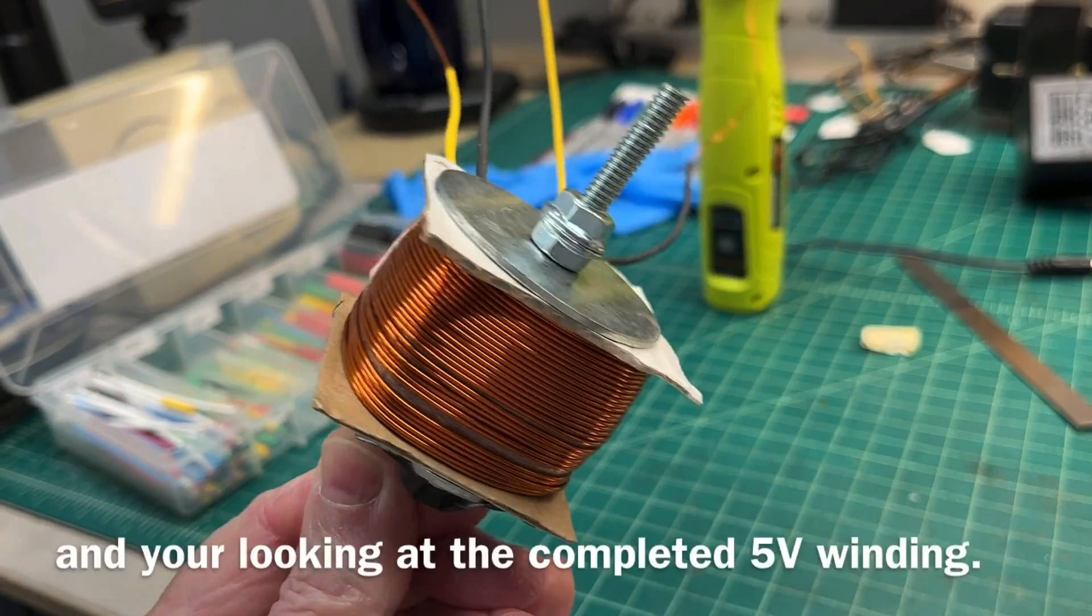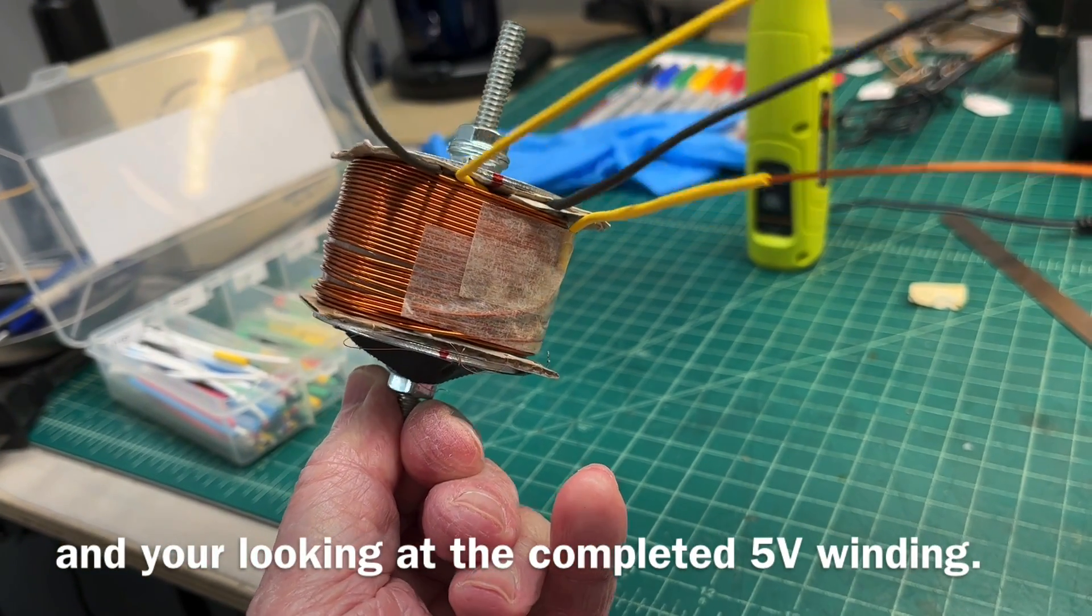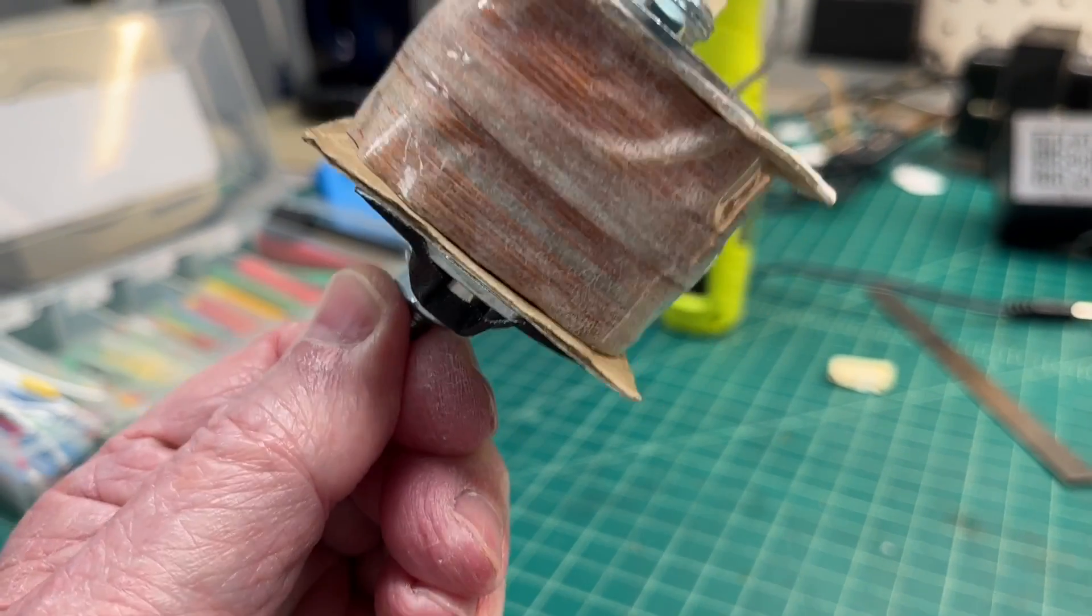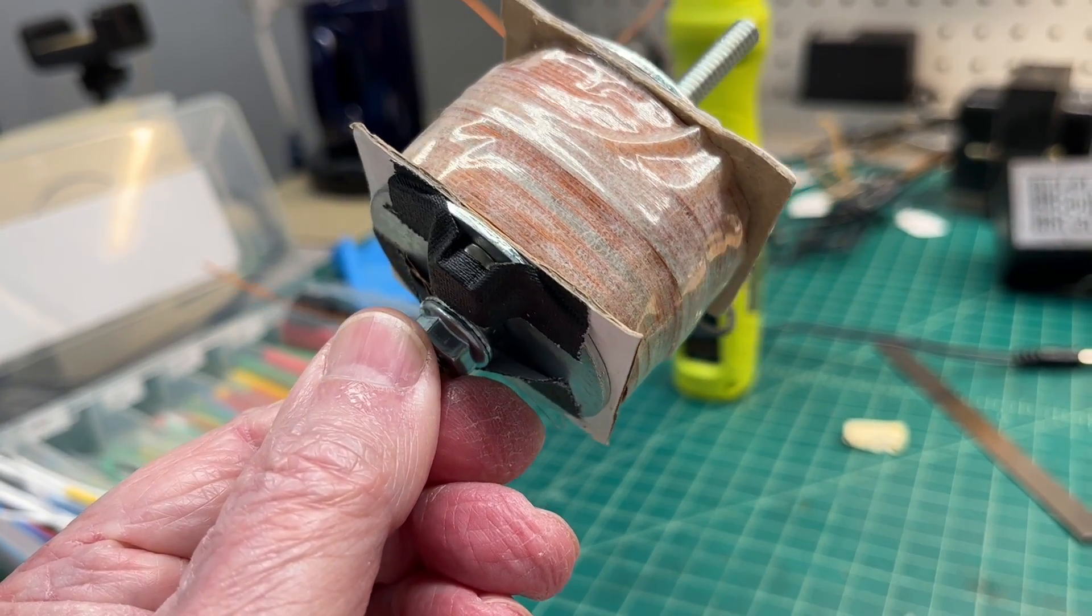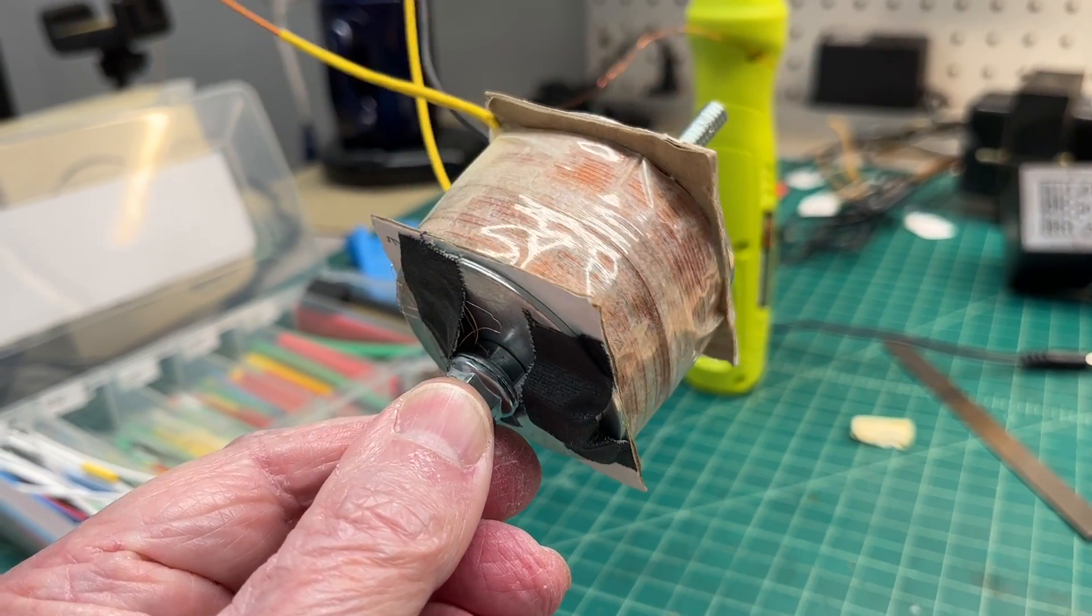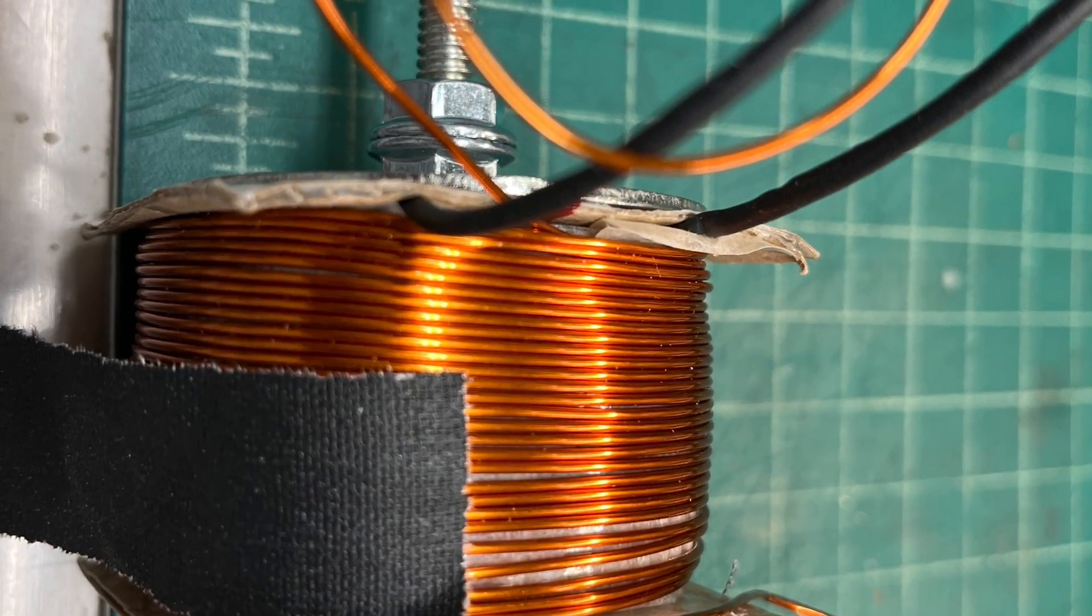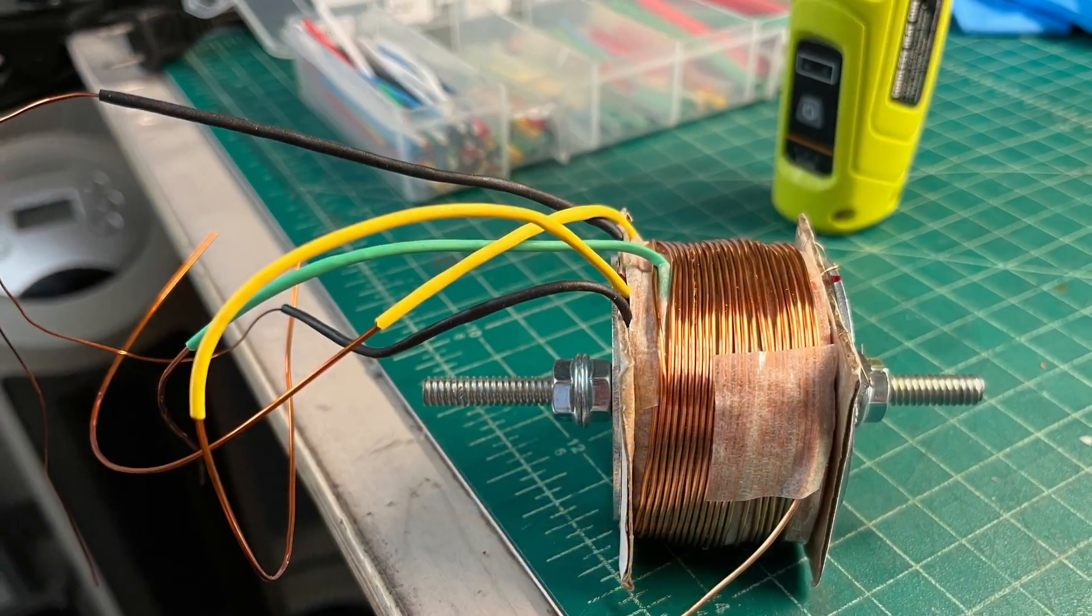Then I'll start hand winding my remaining two secondaries, the 5 volt first, 31 turns using 19 AWG wire, and then the 6.3 volt winding using number 18 AWG, 39 turns.